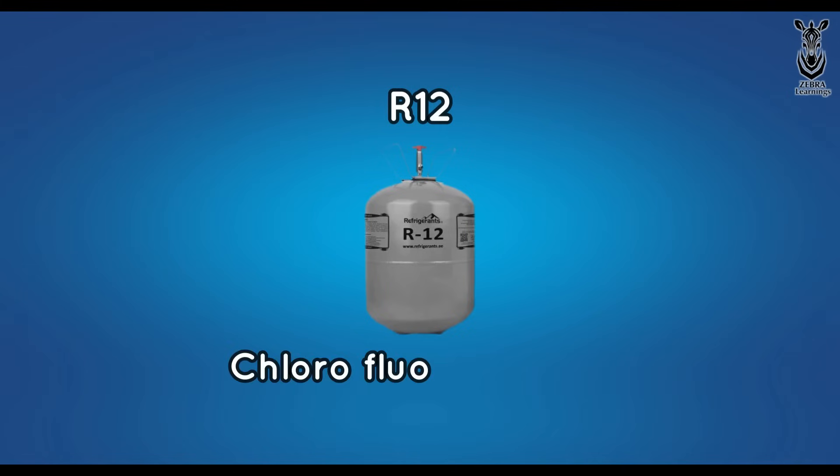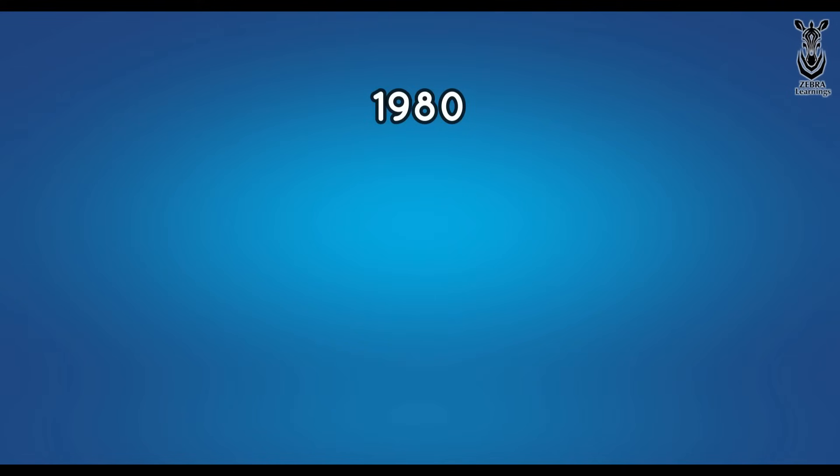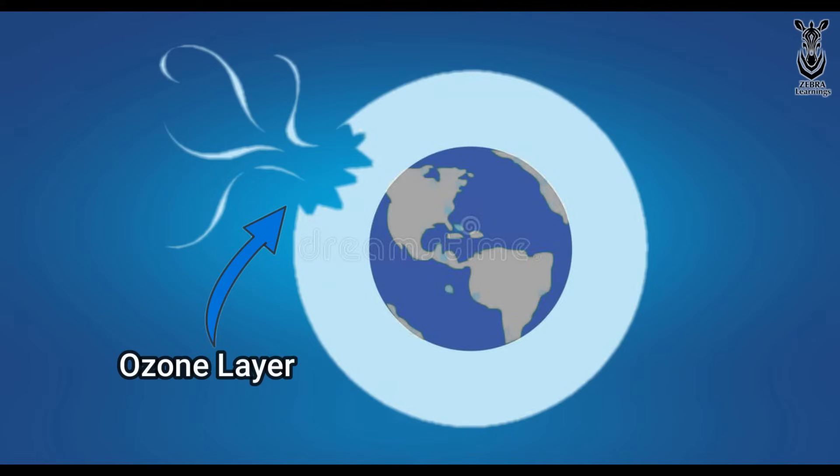Thus, the first non-flammable R12 refrigerant was invented and used in 1928. Chlorofluorocarbon chemical is used in this R12 refrigerant. In 1980, it became known that this chlorofluorocarbon chemical is damaging the ozone layer severely.